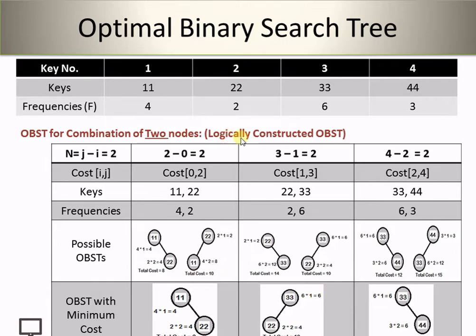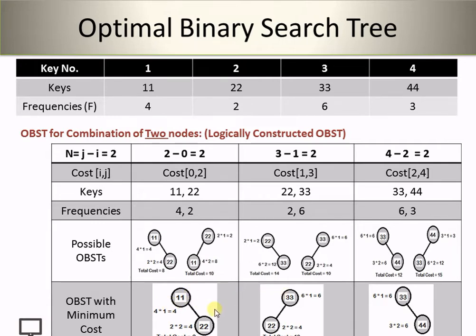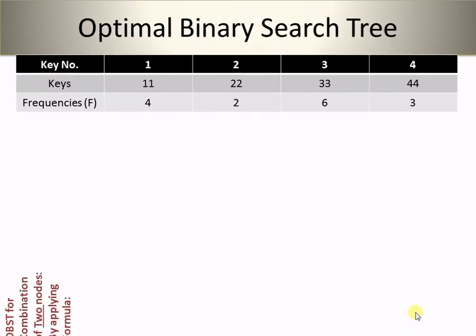Here is how the logic was applied: for 11 and 22, node 11 has higher frequency so it is at root position, lower frequency node 22 is at leaf. For 22 and 33, node 33 has higher frequency so it is at root, 22 at leaf. For 33 and 44, node 33 has higher frequency so it is at root, 44 at leaf. By applying this logic, we can construct the optimal trees for all two-node combinations.